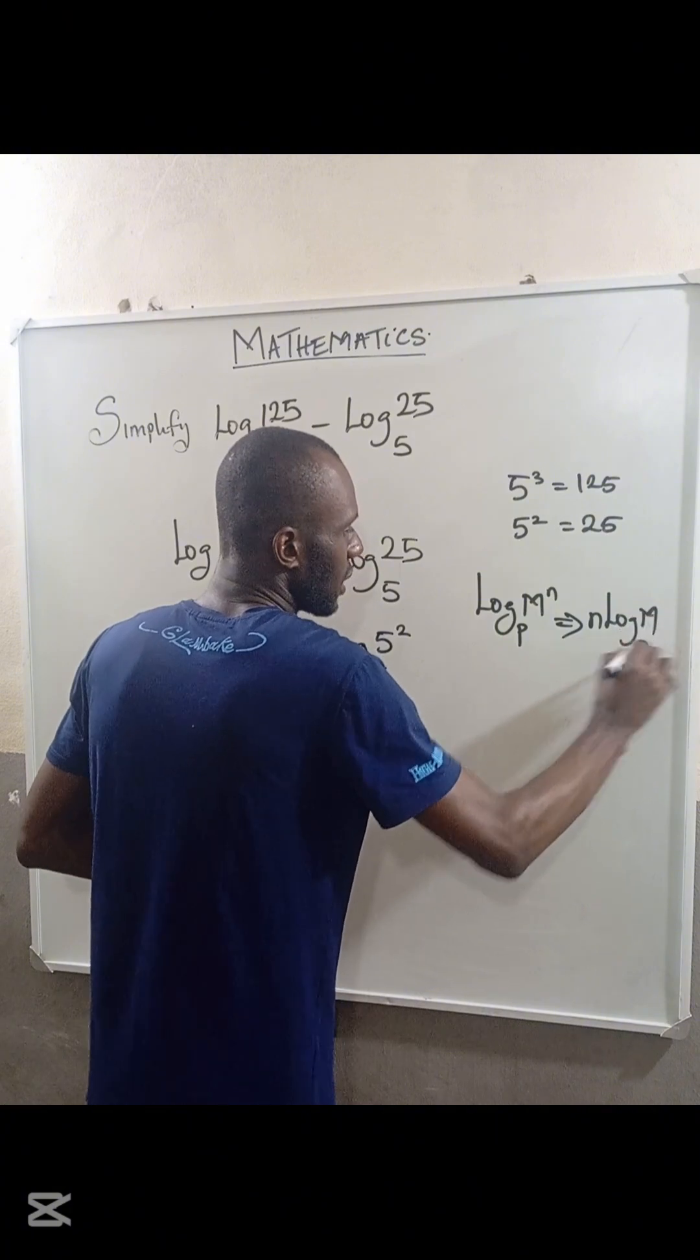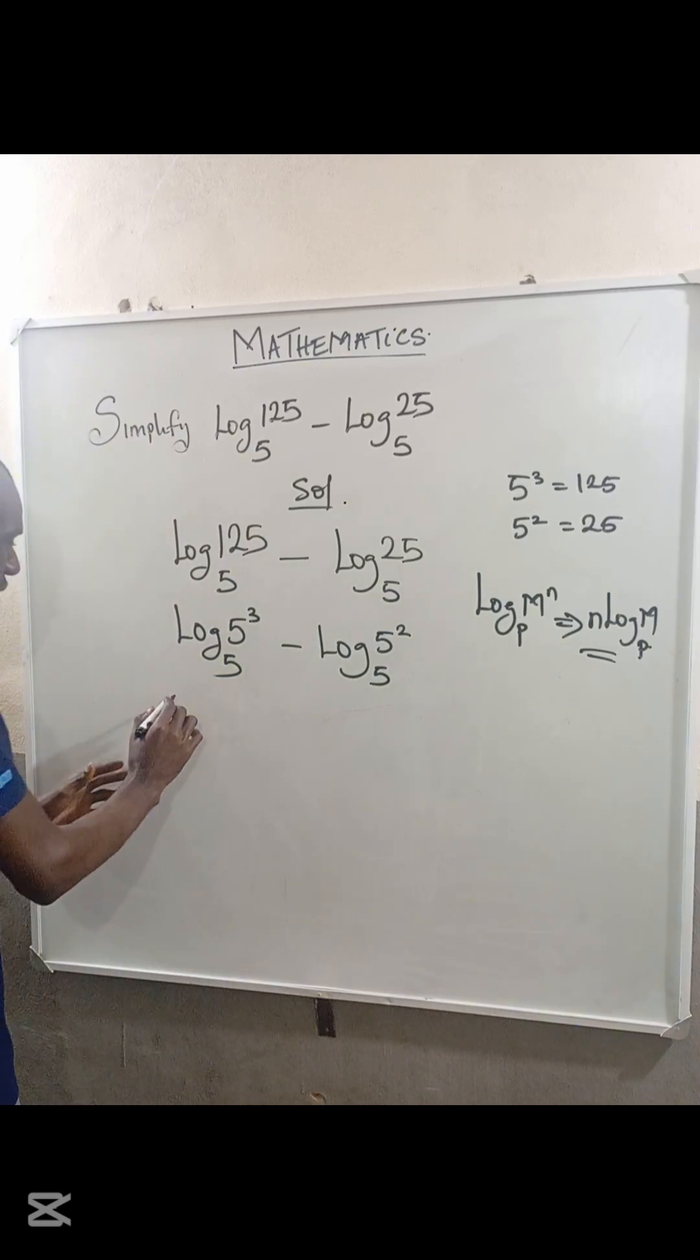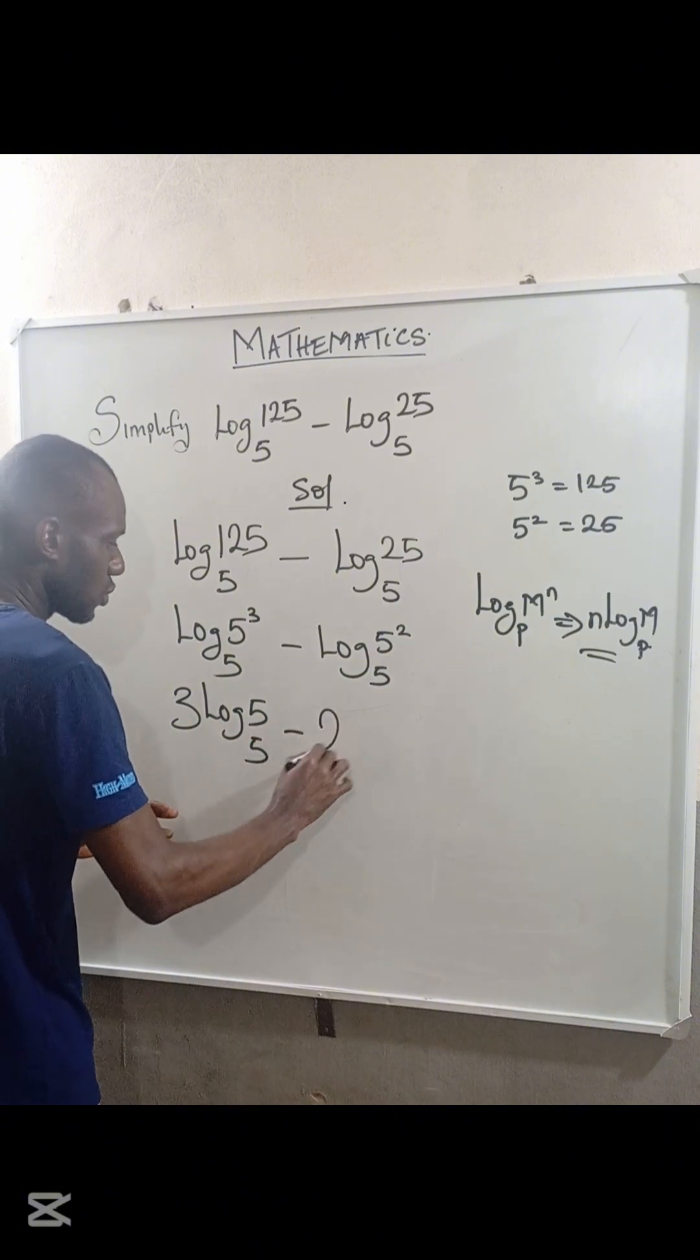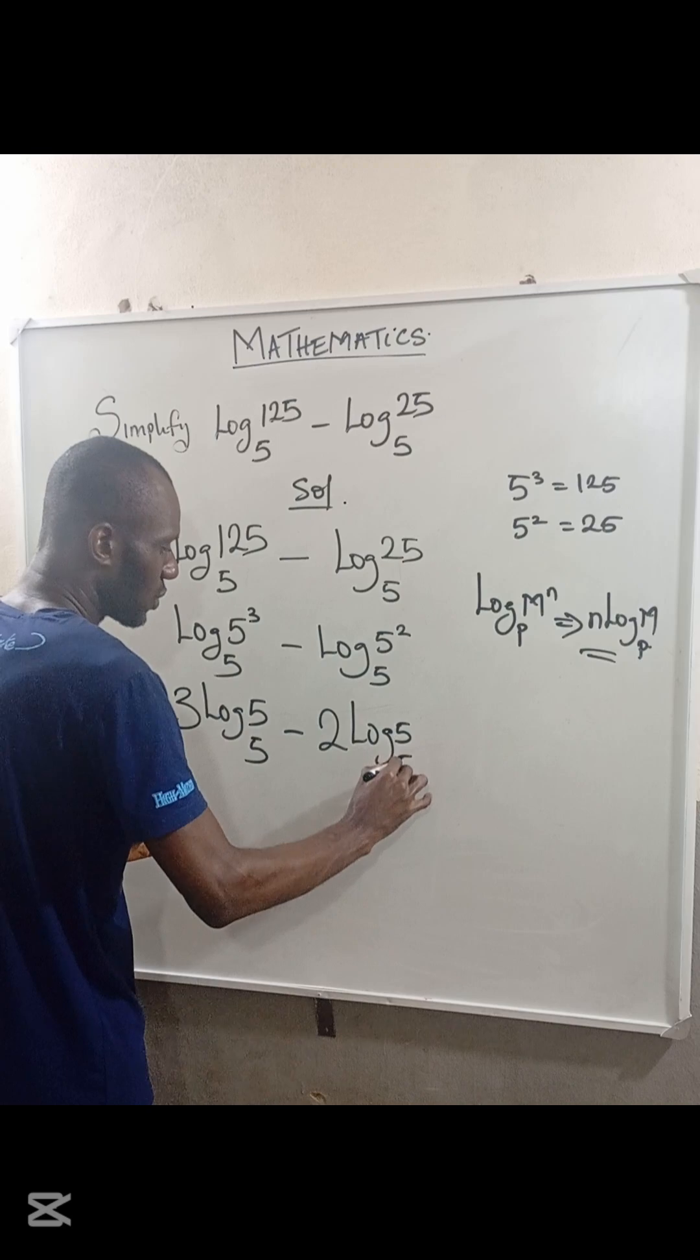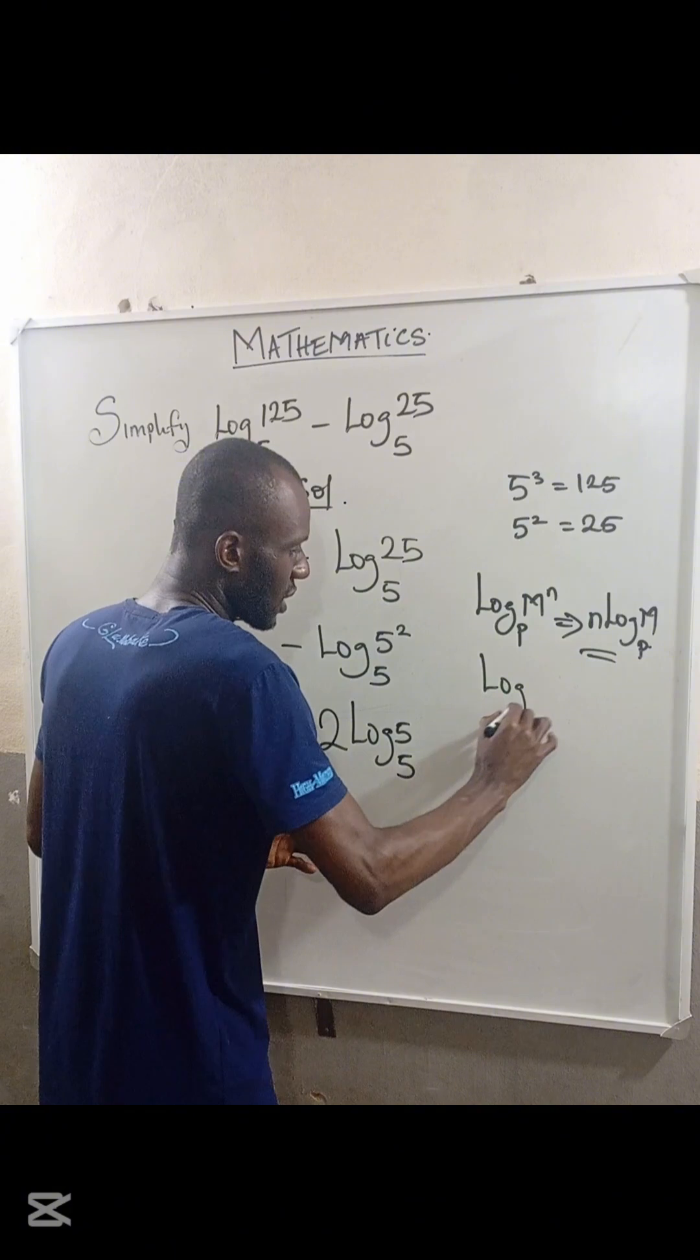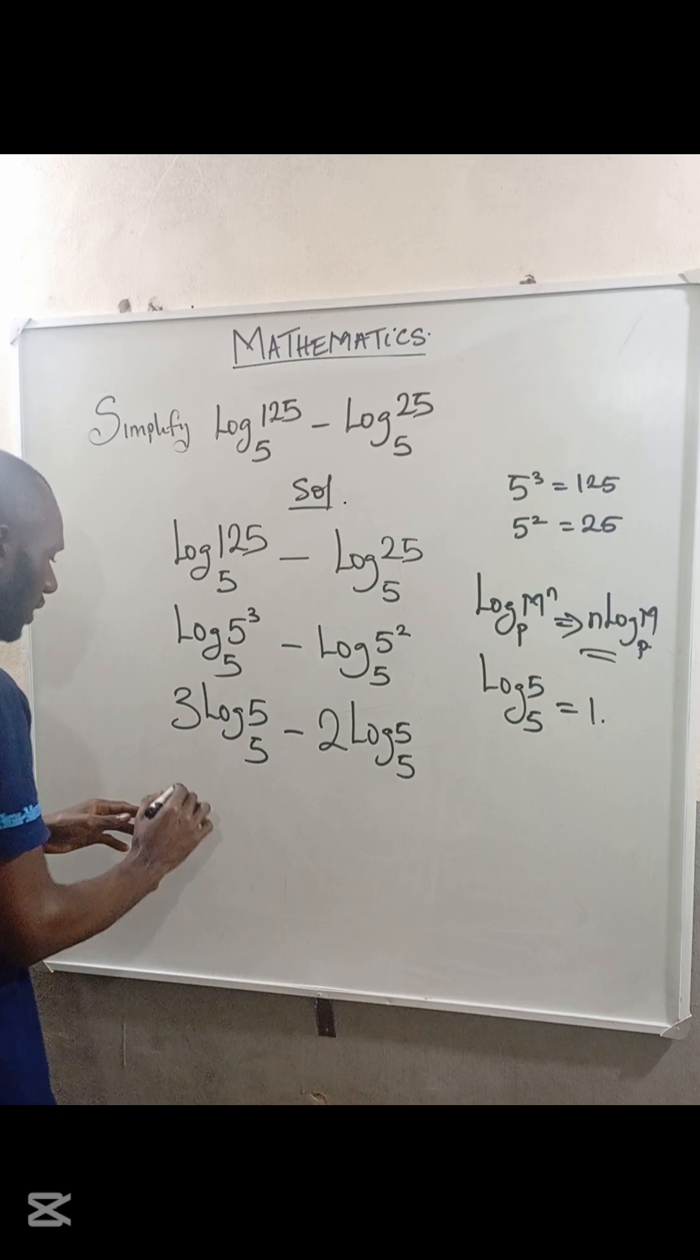If we apply this rule, the expression becomes 3 multiplied by log 5 base 5, minus 2 multiplied by log 5 base 5. Recall that log of a number to its own base equals 1, so log 5 base 5 equals 1.